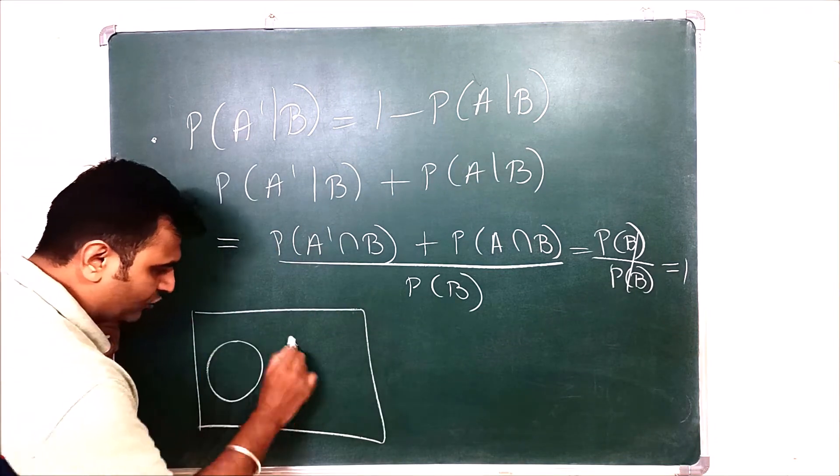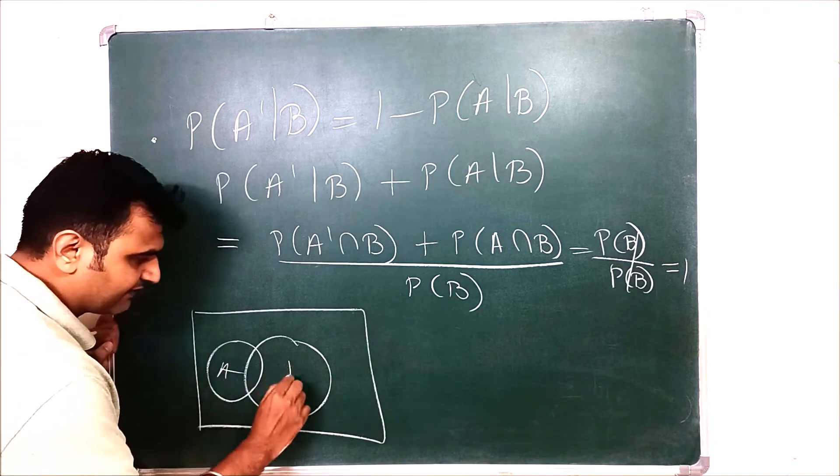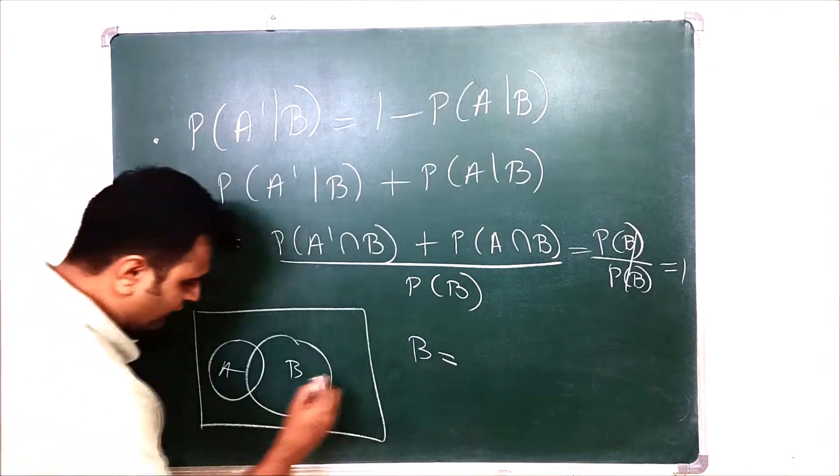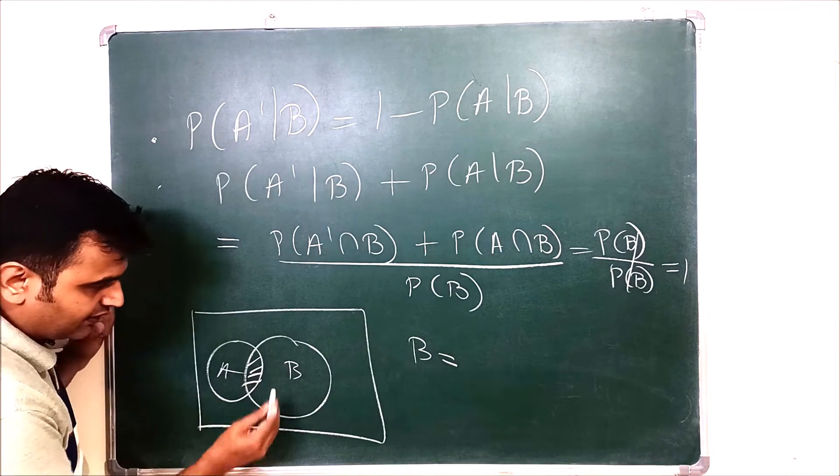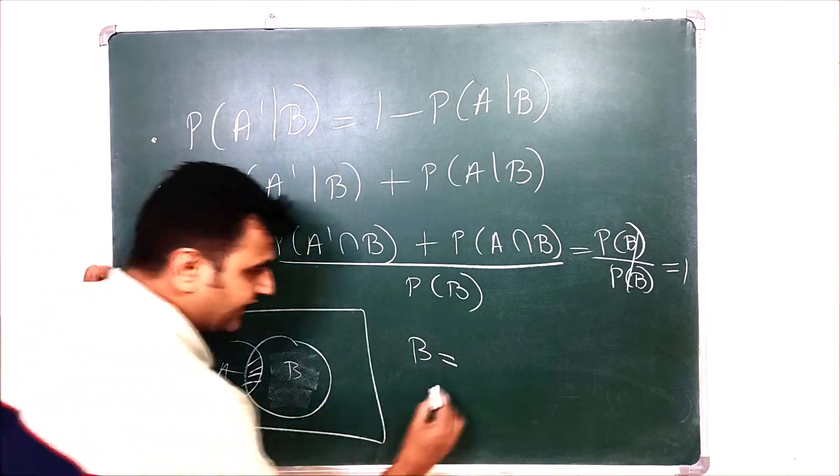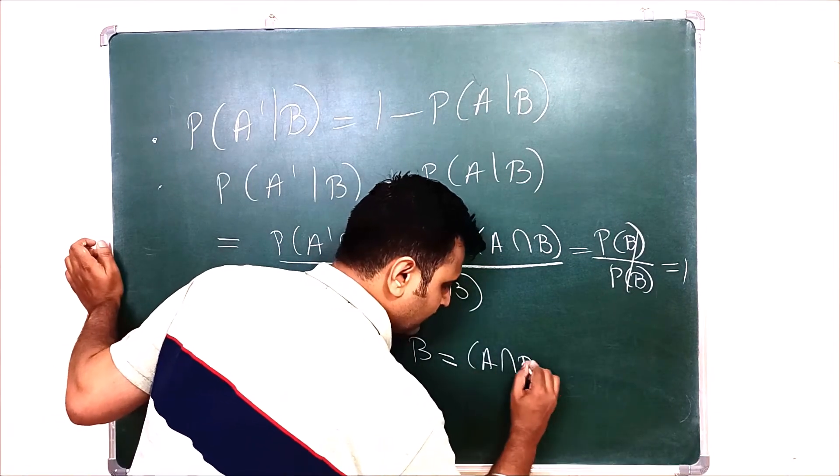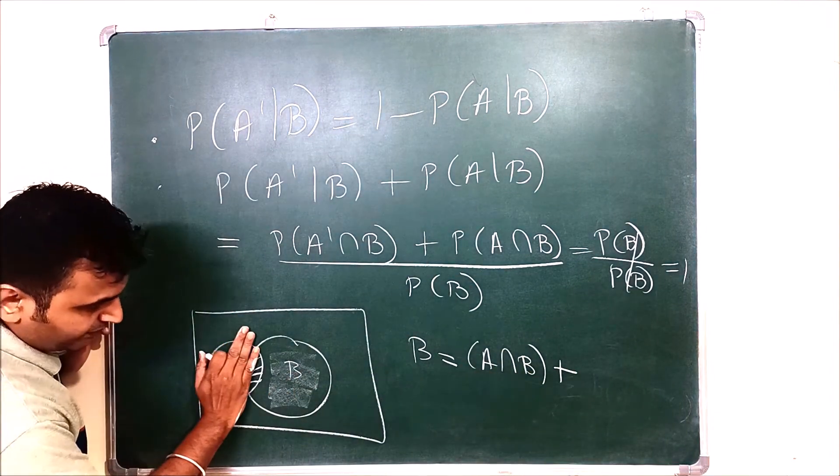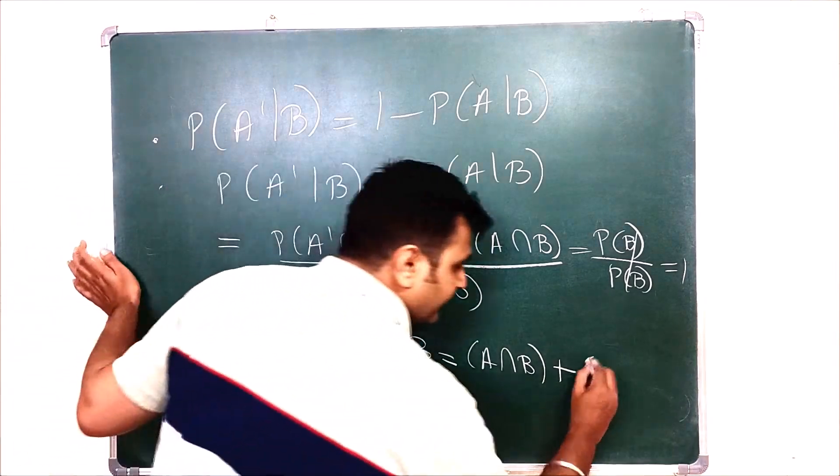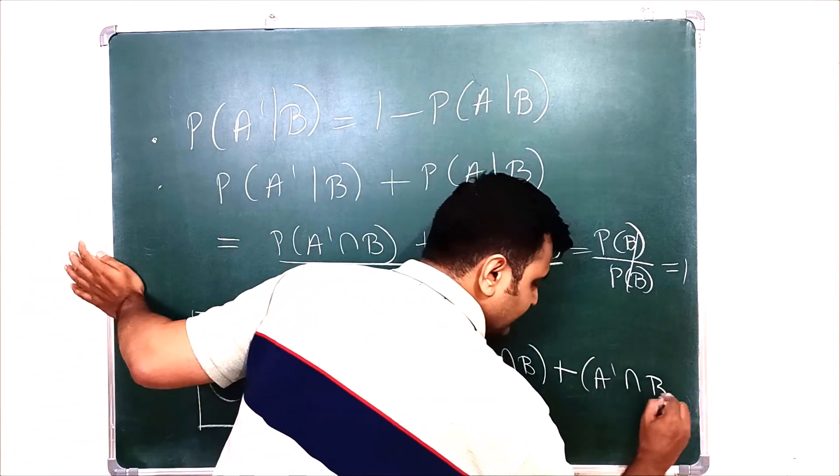Now why is that true? So if you observe this Venn diagram over here, this is my A, this is my B. See, I can write my B as this part plus this part. They are disjoint. So what is this part? A intersection B. And what is this part? A complement intersection B. So this shaded part is A complement intersection B.